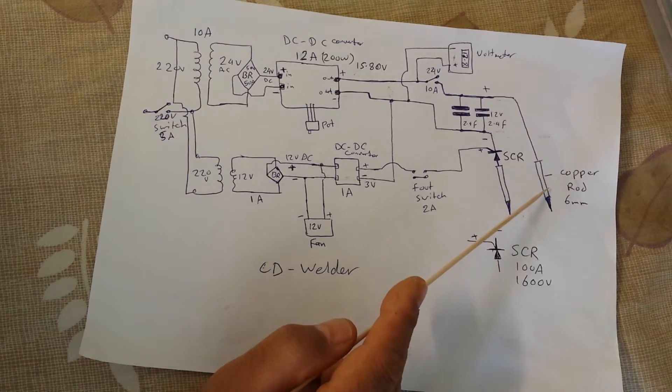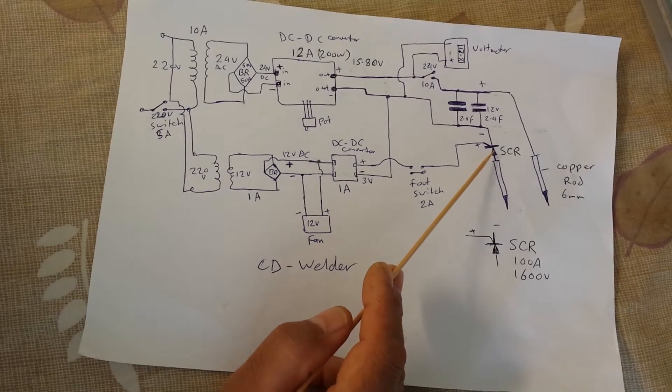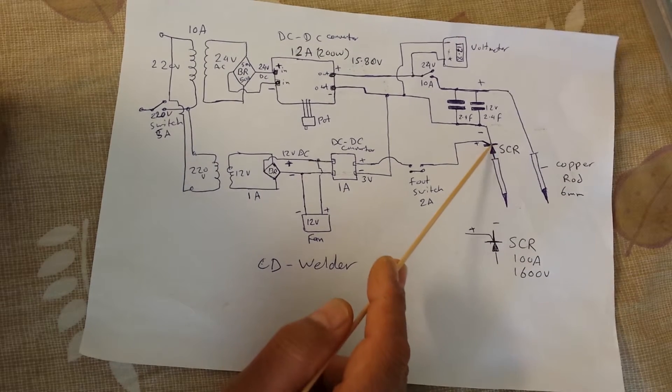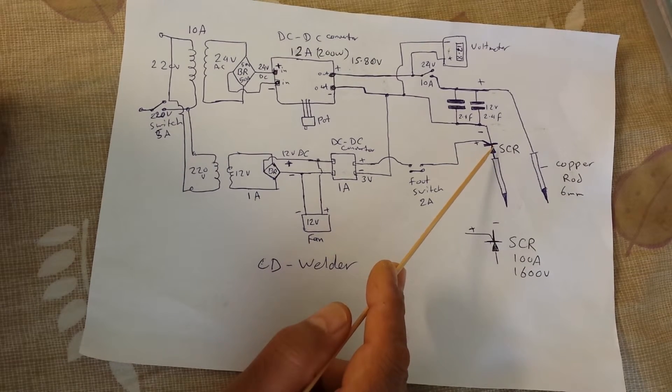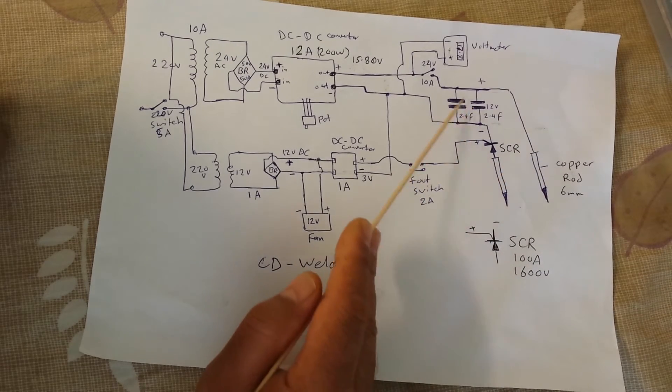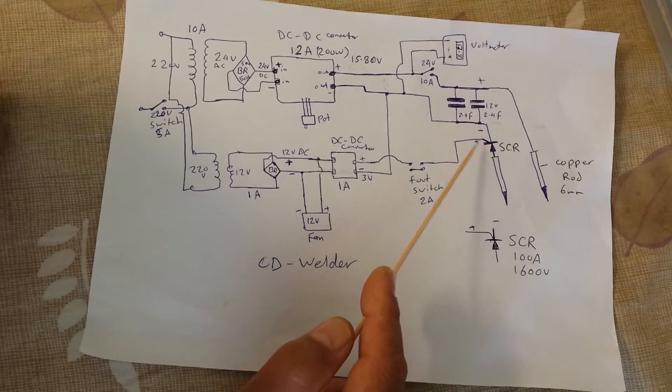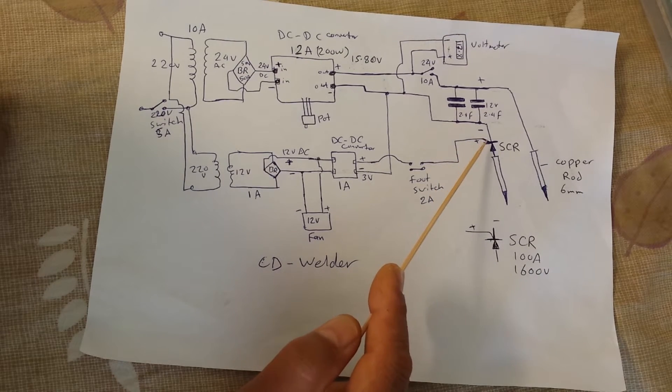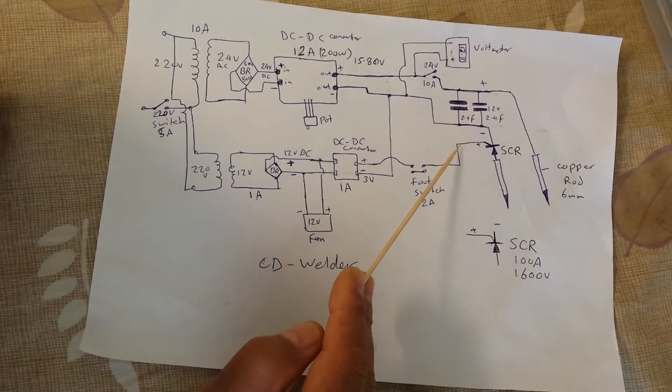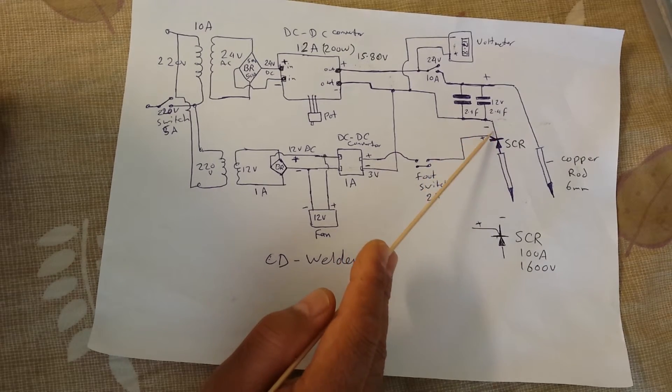On the negative terminal I put this thyristor, the SCR, silicon controlled rectifier. This is the one who makes the discharge. This is the gate for discharging these capacitors. How it works: this one needs about 3 volts DC to operate. In order to make this line open or closed, we need 3 volts. This is the positive of the thyristor and this is the negative.